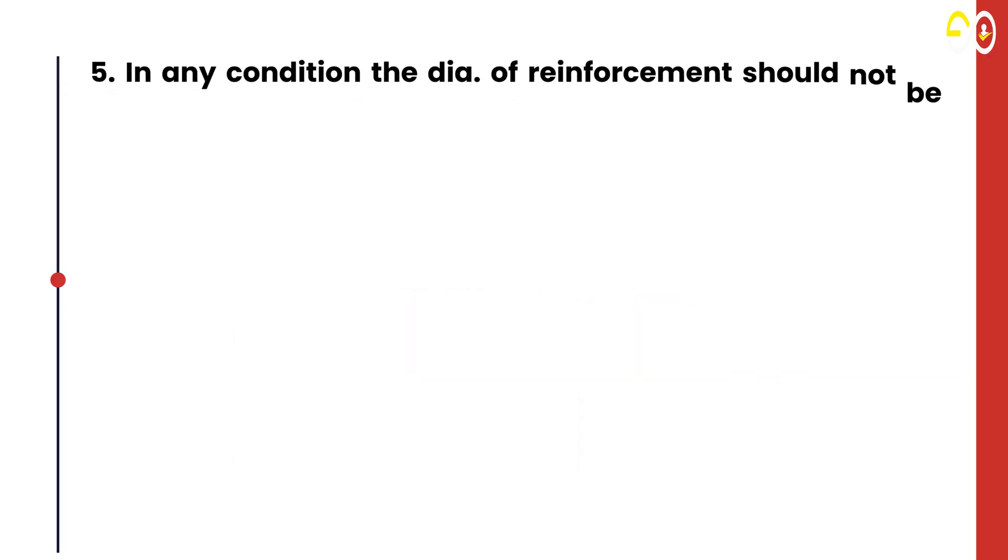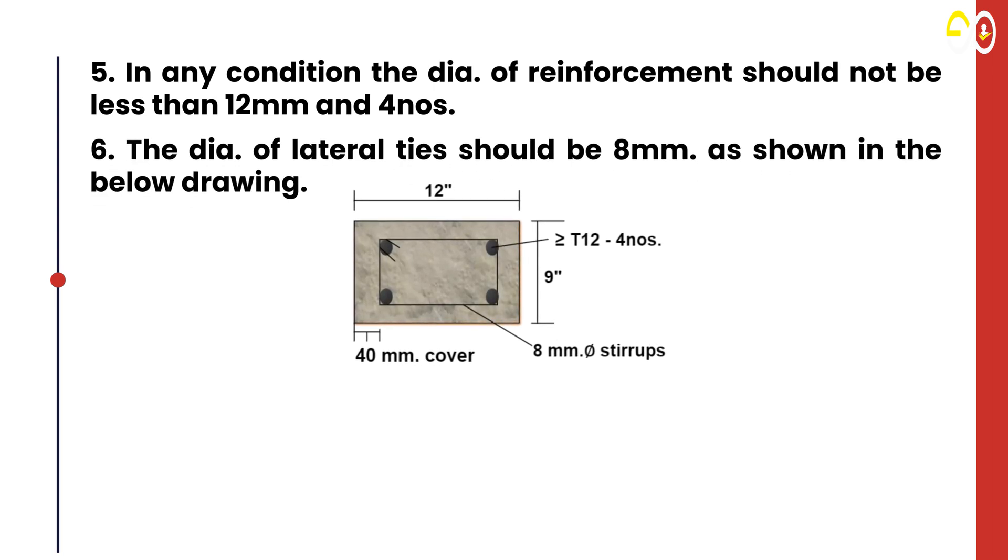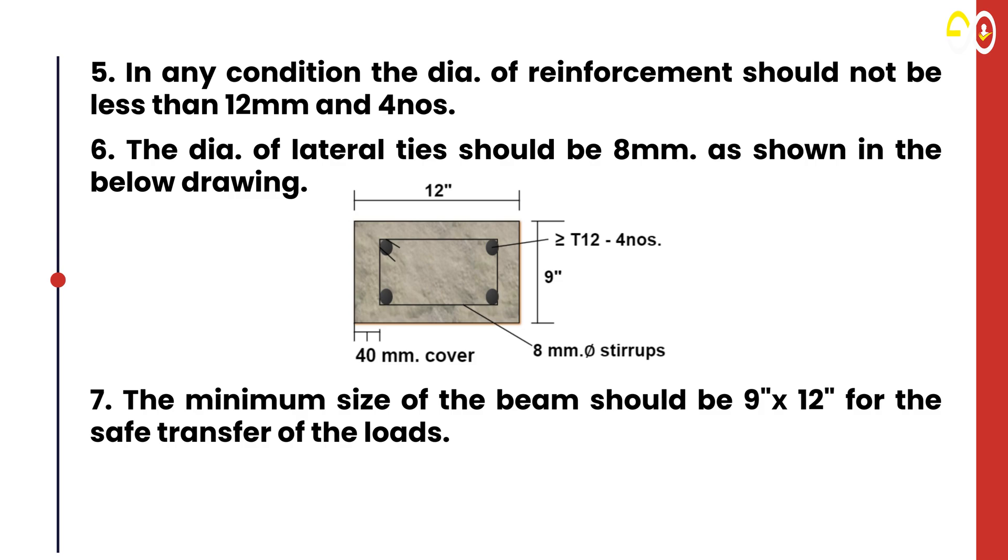5. In any condition, the diameter of reinforcement should not be less than 12mm with 4 steel bars. 6. The diameter of lateral ties should be 8mm, as shown in the below drawing. 7. The minimum size of the beam should be 9" x 12" for safe transfer of loads.